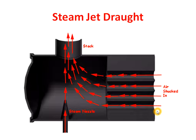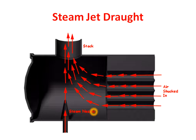Its major disadvantage is that when we are starting the boiler, the boiler doesn't have any steam pressure. So at the start we can't produce draft with the help of this steam nozzle, because in the beginning the boiler doesn't have any steam pressure. Only when the boiler generates sufficient steam pressure will this steam jet draft system work. So this is its major drawback.